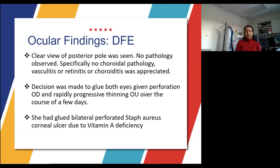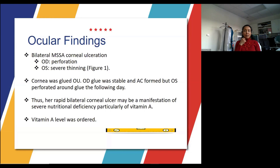There was a clear view of the posterior pole with no choroidal pathology, vasculitis, retinitis, or choroiditis appreciated. We decided to glue both eyes given the corneal perforation and rapidly progressive thinning. She had bilateral corneal ulcers due to vitamin A deficiency. Cultures revealed bilateral MSSA corneal ulcers. Her right eye cornea was perforated and her left eye had severe thinning. The right eye glue was stable and the AC formed, but unfortunately the left eye cornea perforated around the glue the following day.